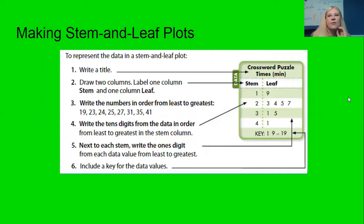Again you put your things in order and then you're going to make a title. You're going to draw the two columns, write your numbers in order least to greatest. Decide how you are doing your stem and leaf plot, decide your key, put the stems in and then put the leaves in.